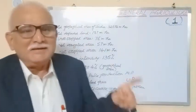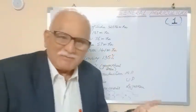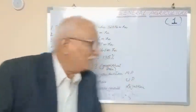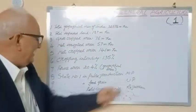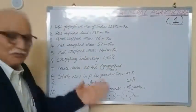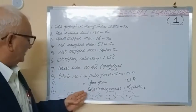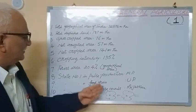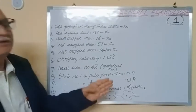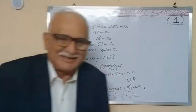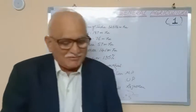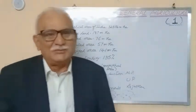The state number 1 in wheat production is Uttar Pradesh. The state number 1 in total coarse cereals production is Rajasthan.